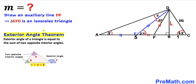Now let's recall the exterior angle theorem once again. According to this theorem, the exterior angle of a triangle is equal to the sum of the two opposite interior angles. So therefore this angle is going to be our exterior angle, equal to the sum of these two opposite interior angles. 2X plus 2X is going to give us 4 times X.